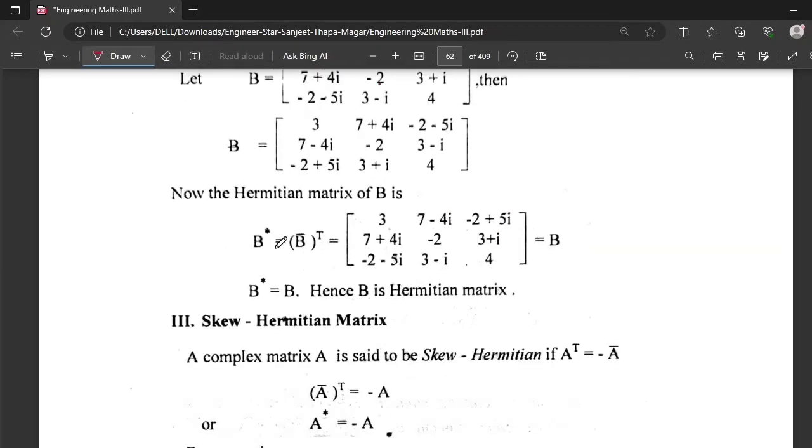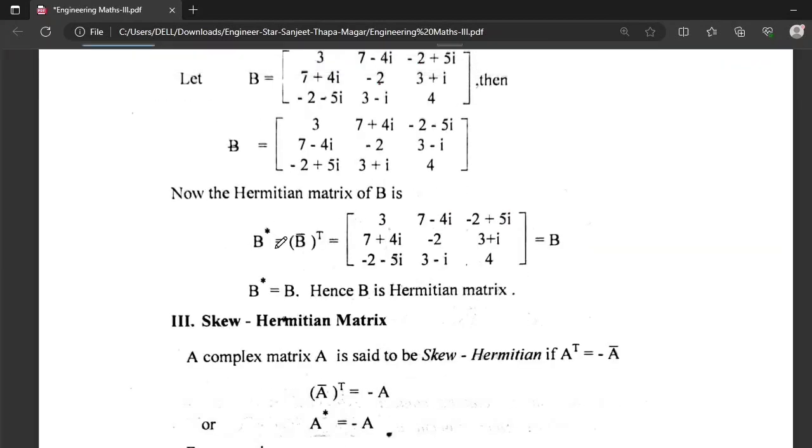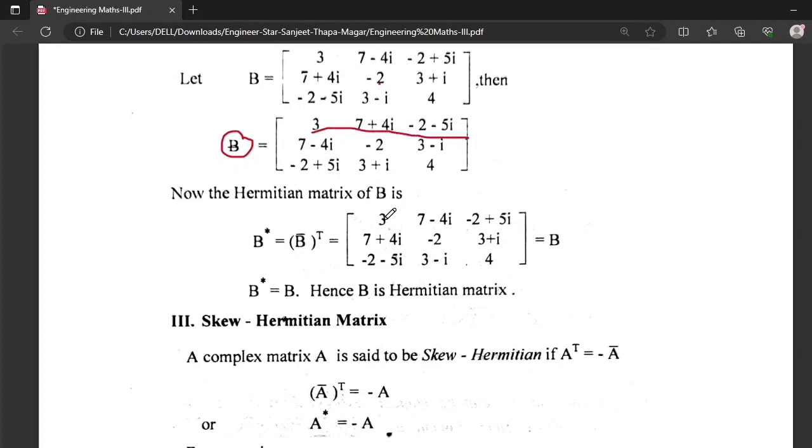The next step is to take the transpose of this conjugate of B. We need to convert this row into column: 3, 7+4i, and -2-5i; 7-4i, -2, and 3-i; and finally changing this row into this column: -2+5i, 3+i, and 4.